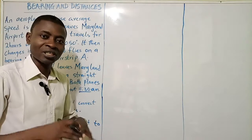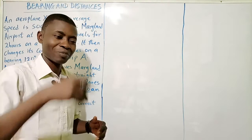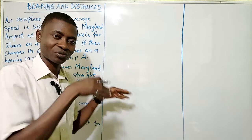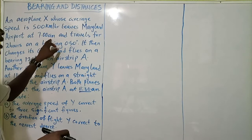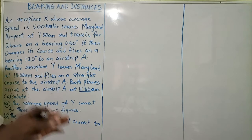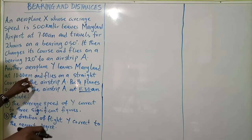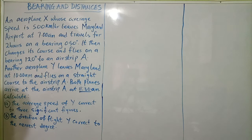We have a question on the board, still on bearing and distance, but this time we're going to bring in the knowledge of speed. The question says that an aeroplane S, whose average speed is 500 kilometres per hour, leaves Maryland airport at 7 am and travels for two hours on a bearing of 050 degrees. It then changes course and flies on a bearing of 120 degrees to an airstrip A. Another aeroplane Y leaves Maryland at 10 am and flies on a straight course to airstrip A. Both planes arrive at airstrip A at 11:30 am.